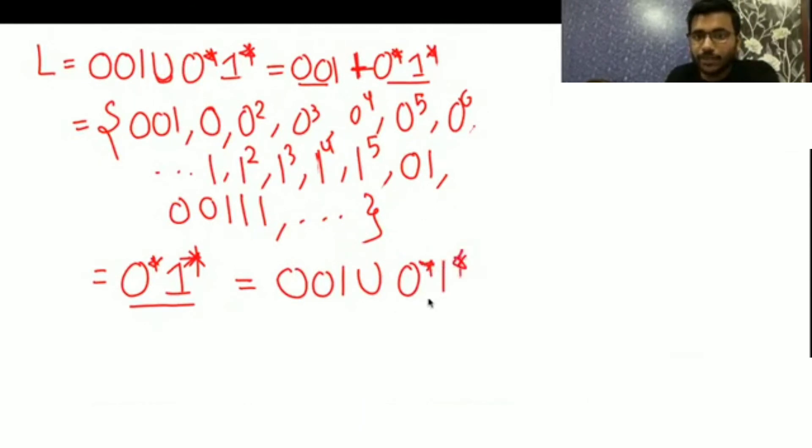But they have taken one string from here and just to confuse you people they have written like this. It is equivalent to 0*1* only. So for this, in our previous lecture we have seen what is the minimal, the minimum pumping length. The minimum pumping length for this language is one.